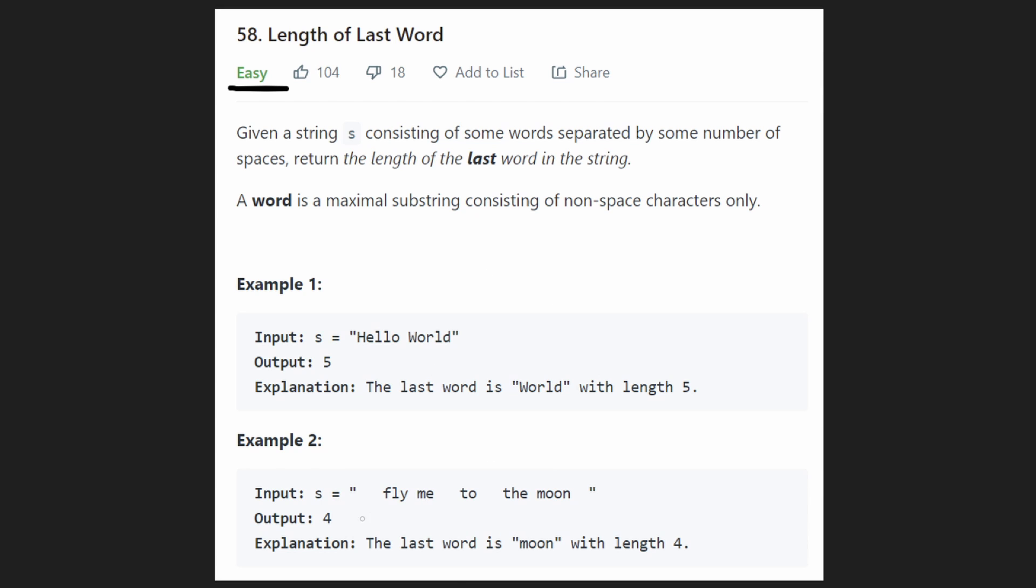You can kind of just iterate character by character. Every time we get a space, just ignore it. Every time we get a character, keep track of whatever the length of the current word is. So for example, we see the first character, F. That's one. The next character, L. So then the length is two. The third character, Y. So the length is three.